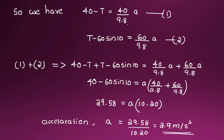We now have two equations: equation one is 40 minus T equals 40 by 9.8 times A, and equation two is T minus 60 sine 10 equals 60 by 9.8 times A. Adding both equations, minus T and plus T cancel out. So 40 minus 60 sine 10 equals A times (40 by 9.8 plus 60 by 9.8). This gives 29.58 equals A times 10.20, so A equals 29.58 divided by 10.20, which equals 2.9 meters per second squared.